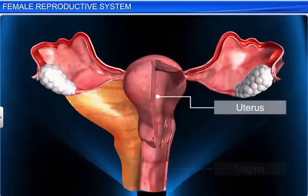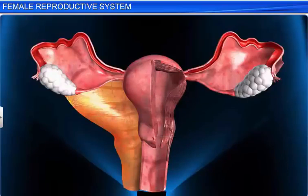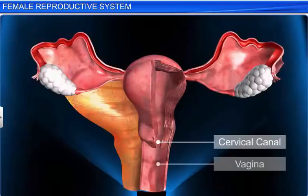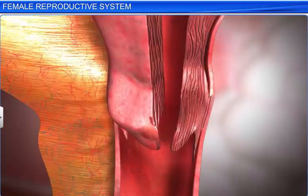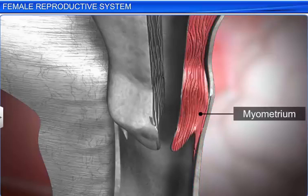The uterus opens into the vagina through a narrow cervix. The cavity of the cervix is called the cervical canal, which along with the vagina forms the birth canal. The wall of the uterus is composed of three layers of tissues. The outer thin membranous layer is called the perimetrium. The middle thick layer of smooth muscle is called the myometrium, and it helps during delivery by producing strong contraction motions.